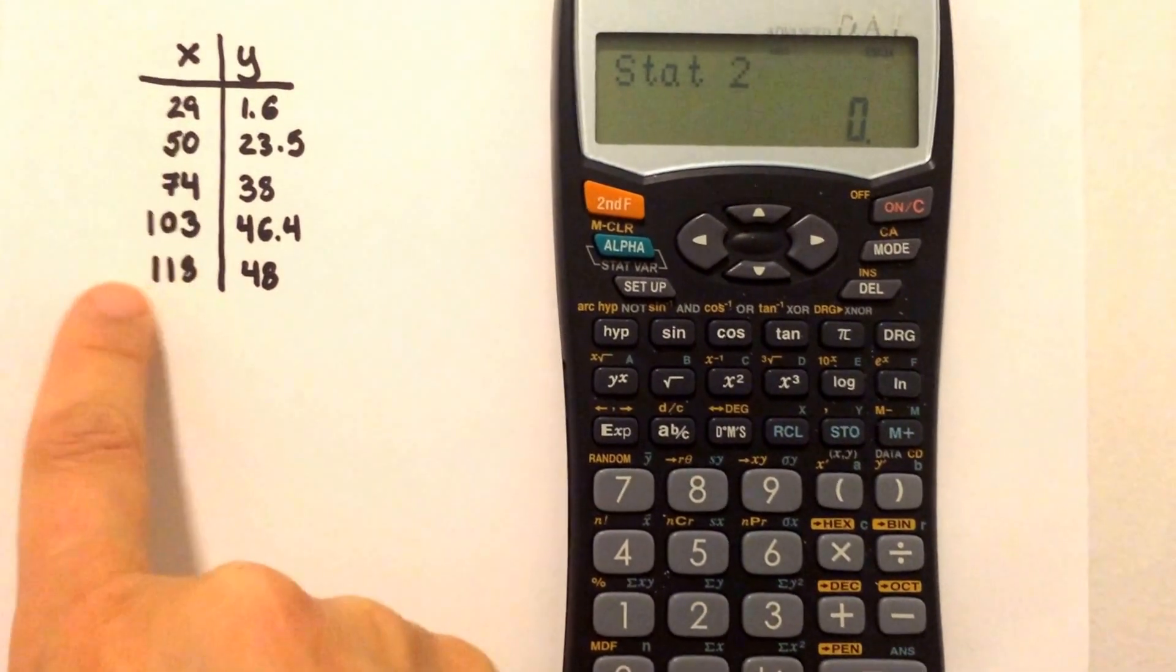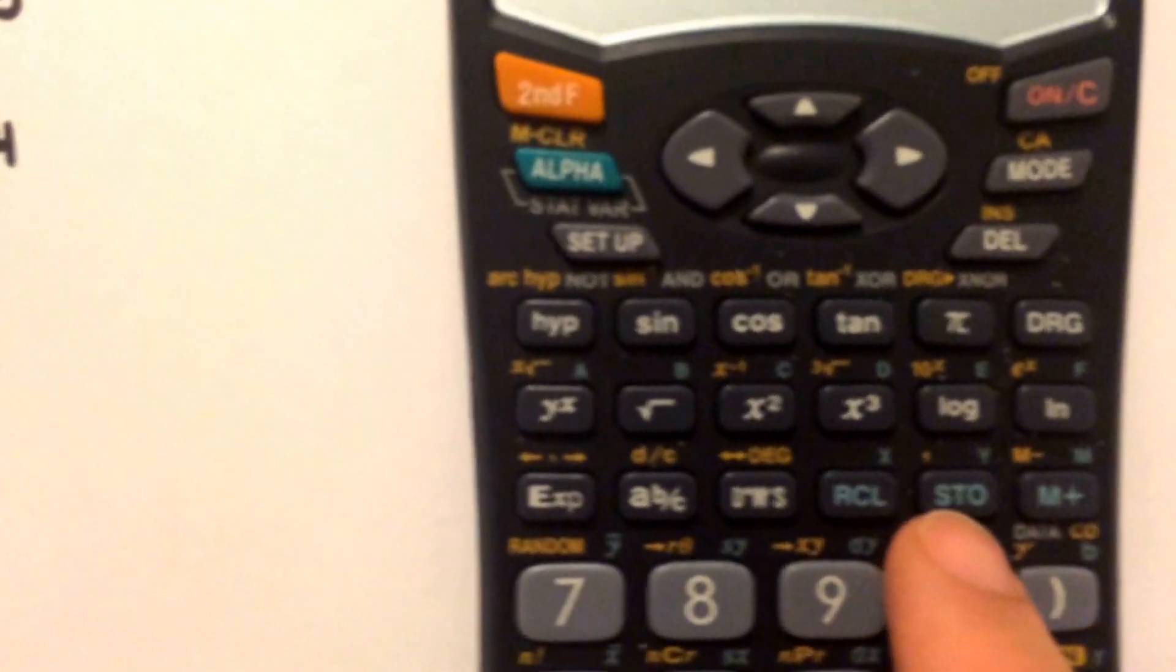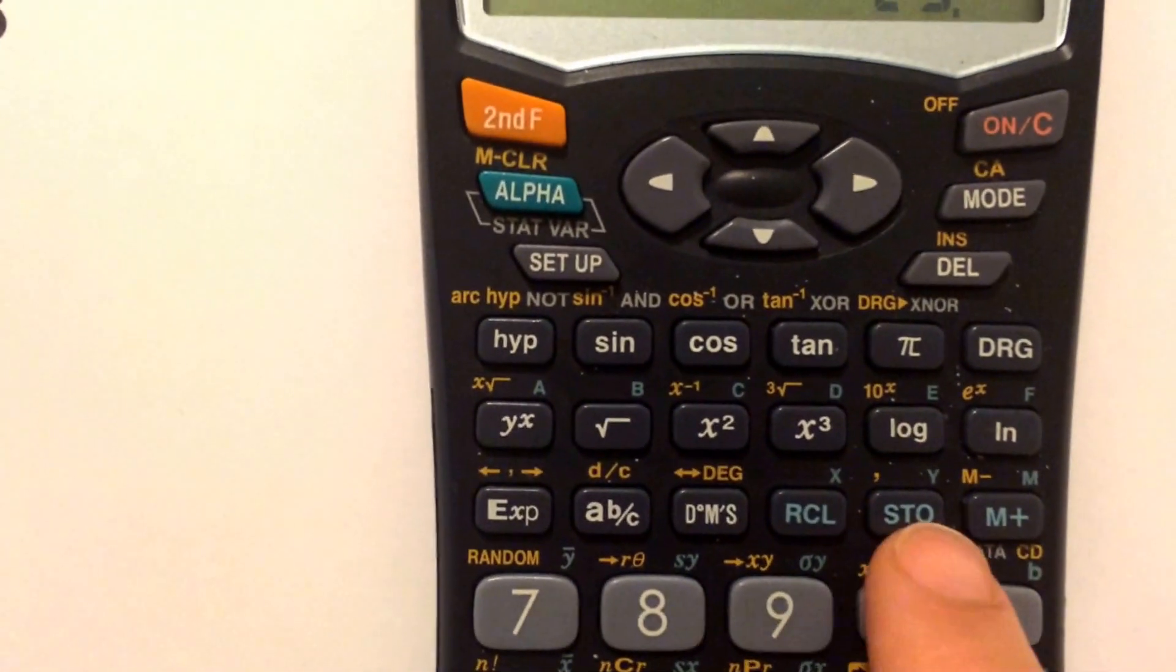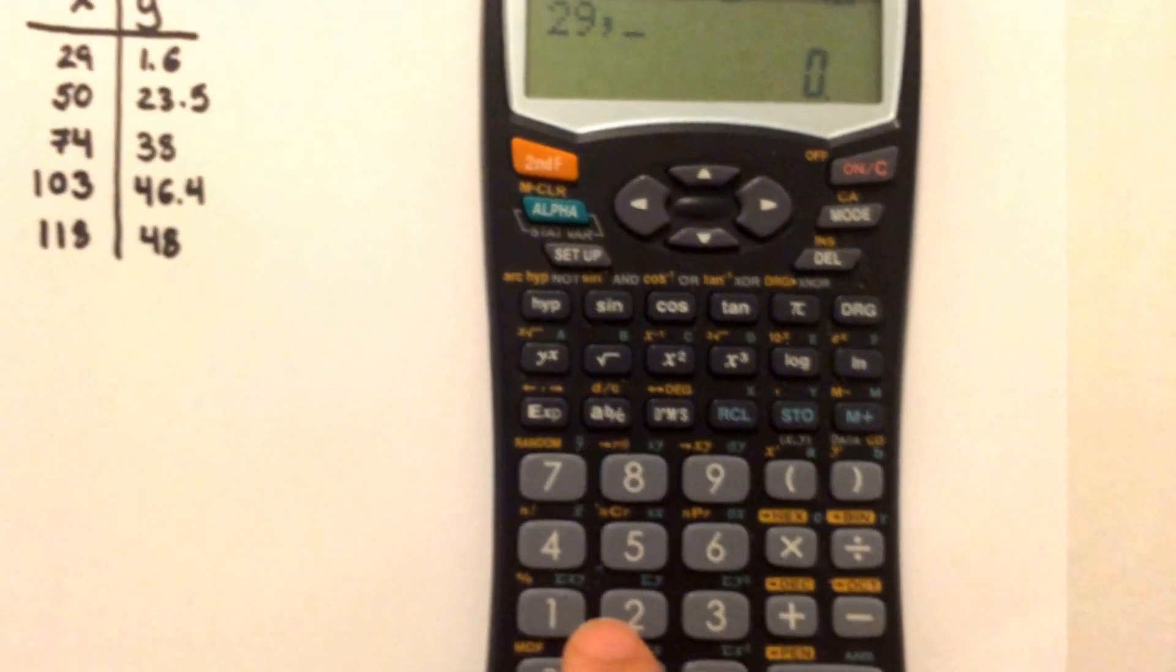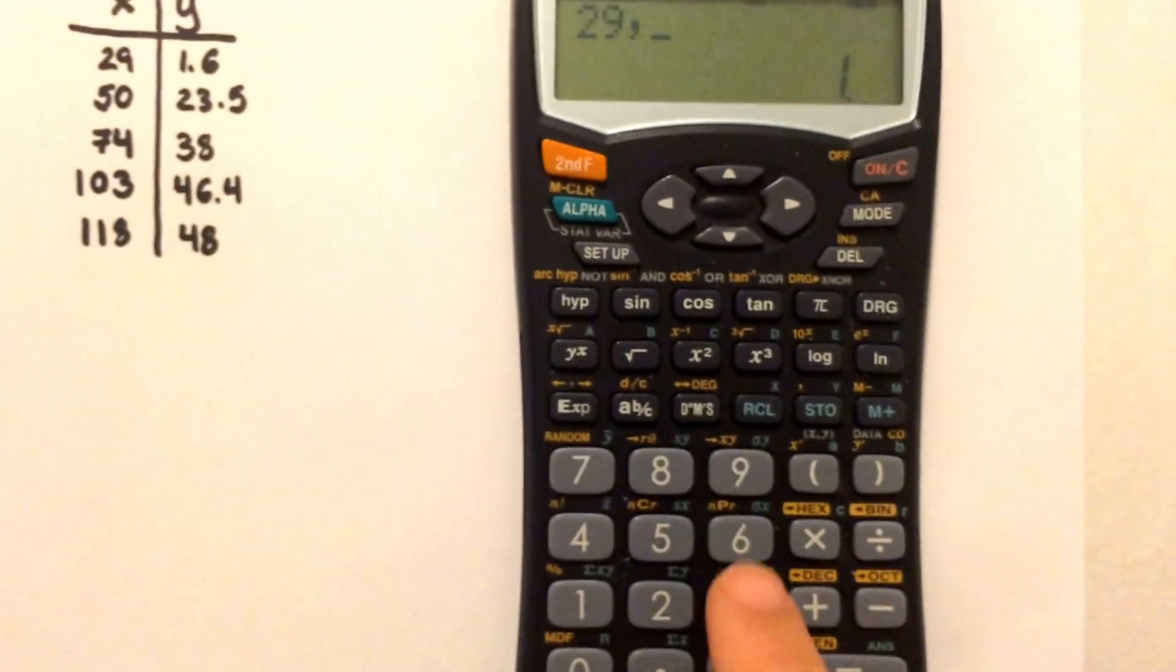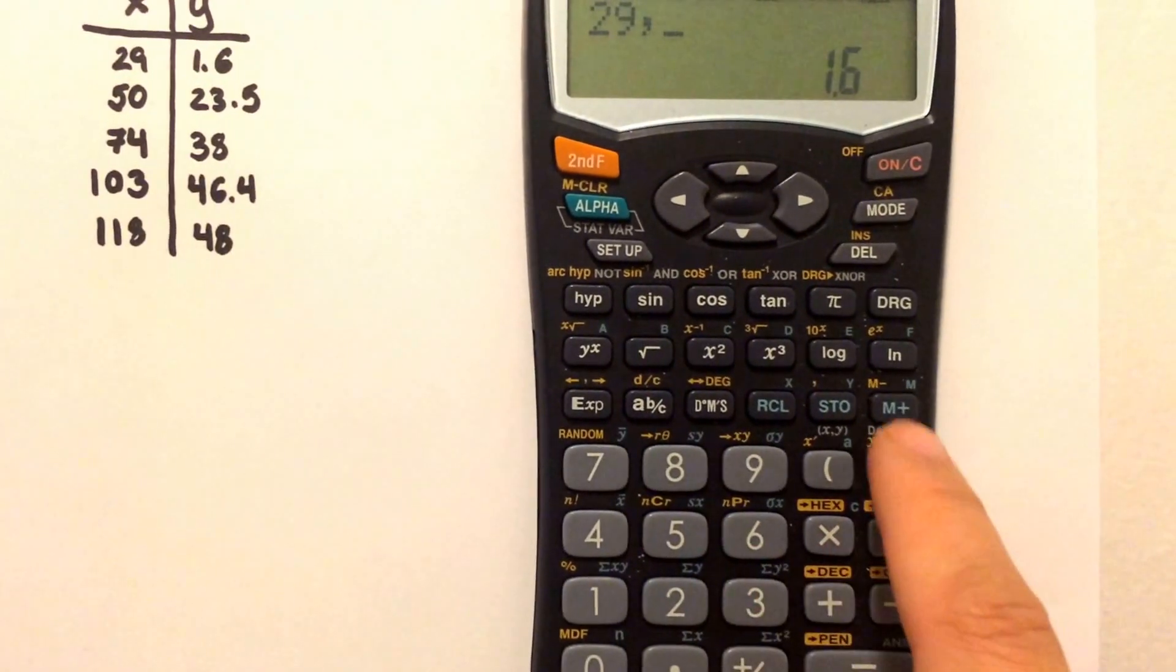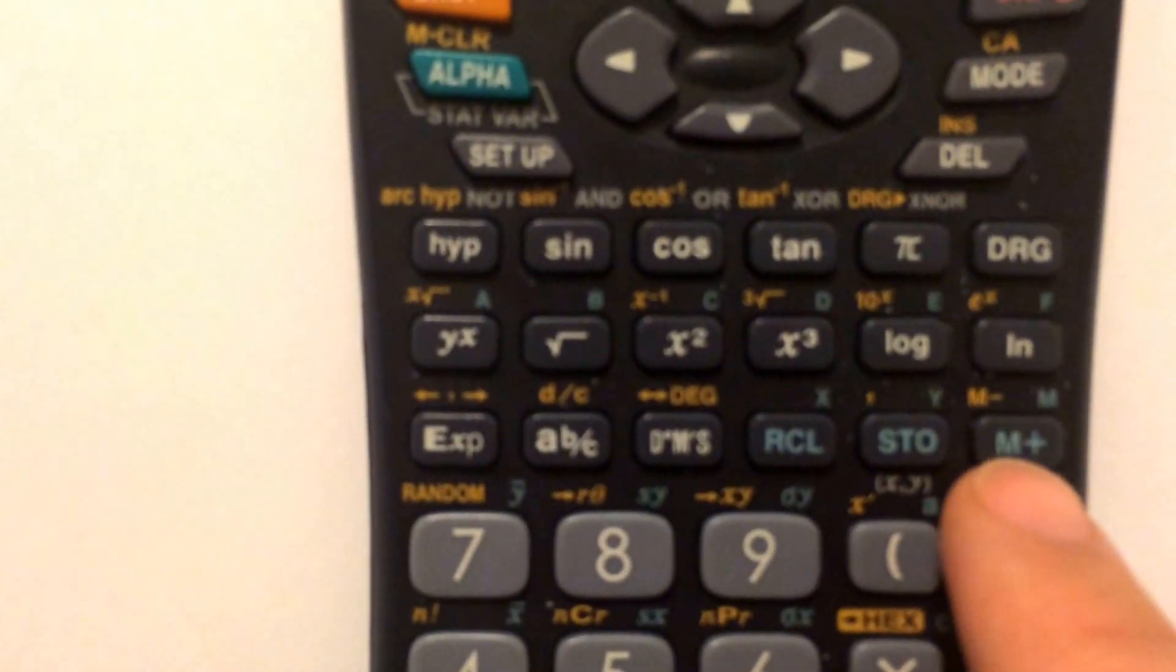Now we're going to enter in all these data points. So you're going to do 29, see this function here, STO, you're going to select that, that's your X value. Then you're going to put 1.6 for your Y value, and you're going to select the one next to it, the M plus key.